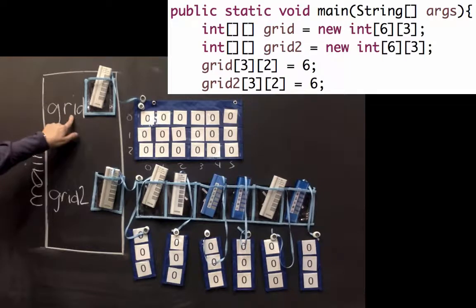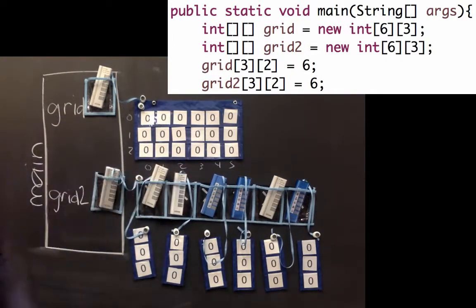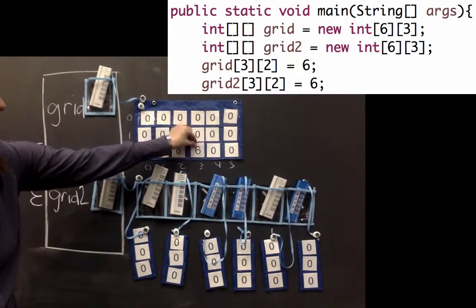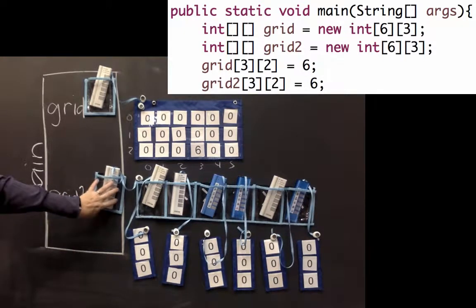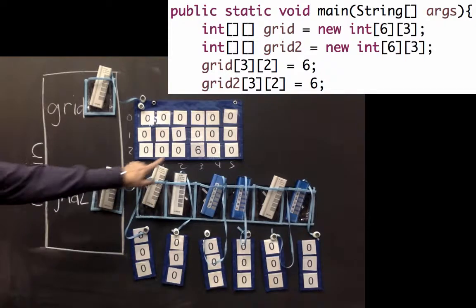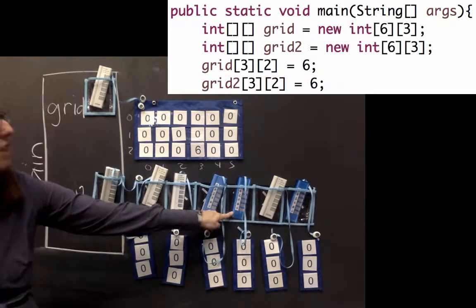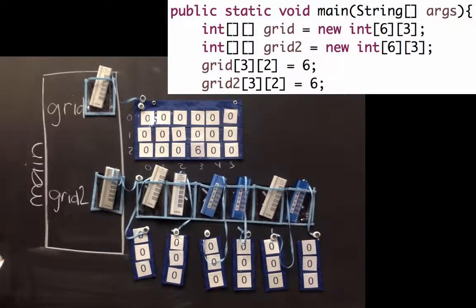So if I was setting grid at index 3, that's there, and then at y value 2, that would set it to 6. Similarly, if I was using grid2, I use my grid2 reference to define index 3. So that's 0, 1, 2, 3. And then I follow that reference to my array to modify index 2.